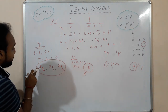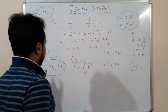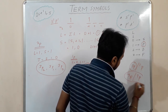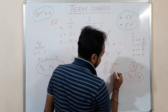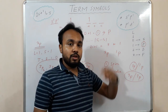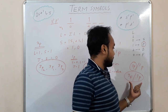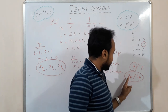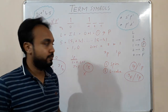Now we have three ³P terms: ³P₂, ³P₁, and ³P₀. If instead we had terms like ³F and ³P with the same spin, we would then look at the L value — higher L means lower energy. For example, ³F would be the ground state term symbol over ³P because it has a higher L value.